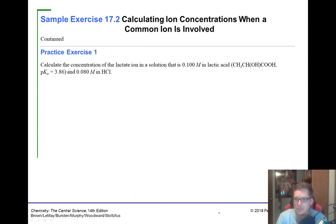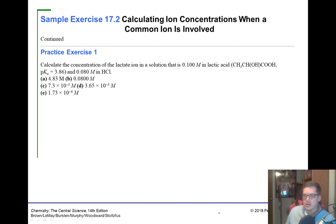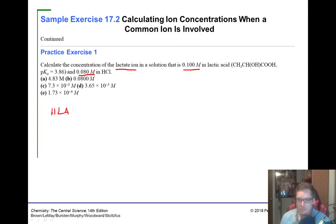Now let's try a different one: calculate the concentration of the lactate ion in a solution that is 0.10 M lactic acid in 0.080 M HCl. We'll call lactic acid HLa. The equilibrium is: HLa ⇌ H+ + La⁻. Setting up the ICE table: initial [HLa] = 0.10 M and [La⁻] = 0.